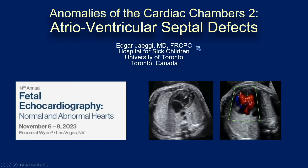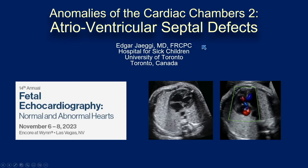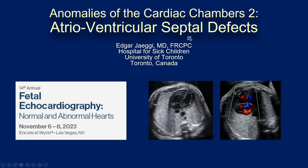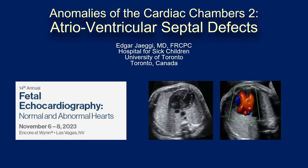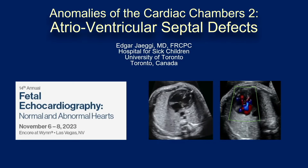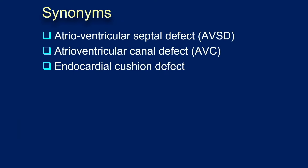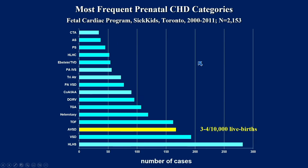The topic I'm coming to is atrioventricular septal defects, and I'm very grateful for the introduction by Julia. I don't need to recapitulate the genetics since it has already been explained, and how the primum ASDs and inlet VSDs look — you already know. I would like to remind you that there are synonyms used for AVSDs: some people say canal defect or endocardial cushion defect — it's the same thing. It's a common abnormality; 5% of all structural heart diseases are AVSDs in all variants.